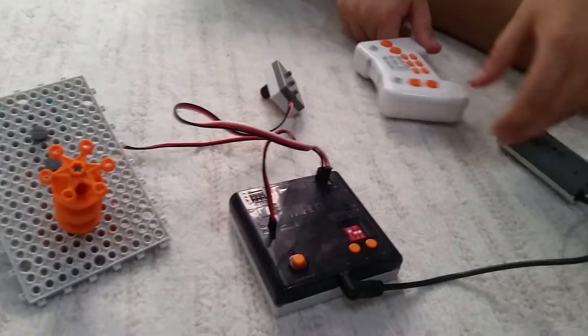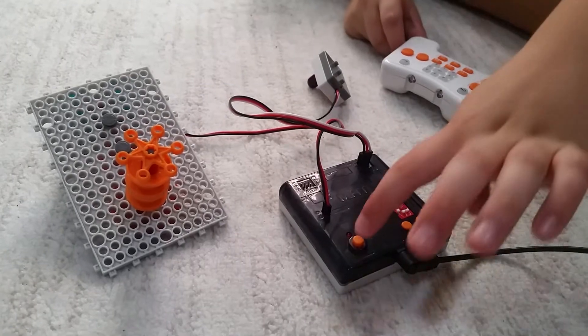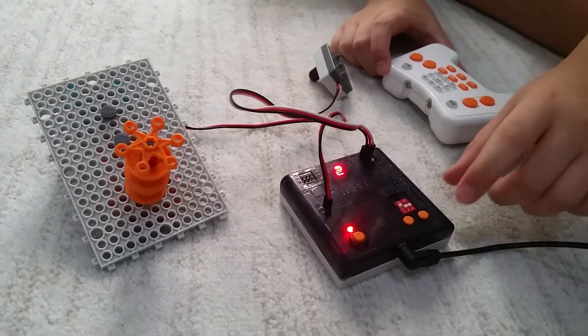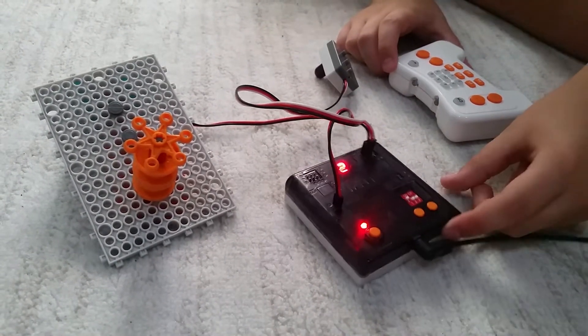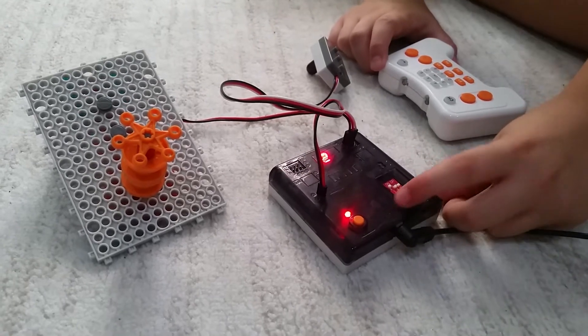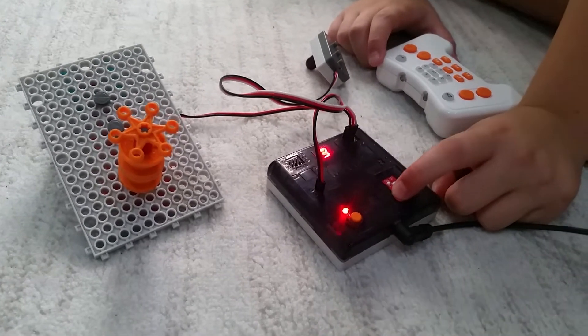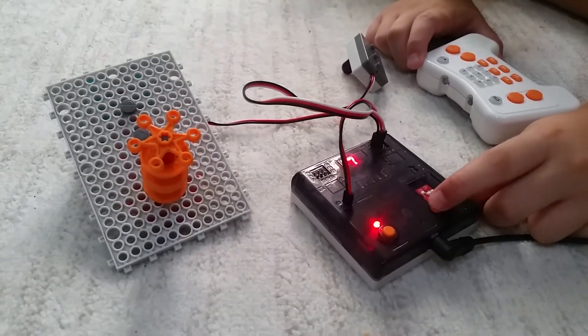Now we just need to turn it on. You turn it on by pressing the power button, and then you need to press the select mode button, and you need to get the number 2.